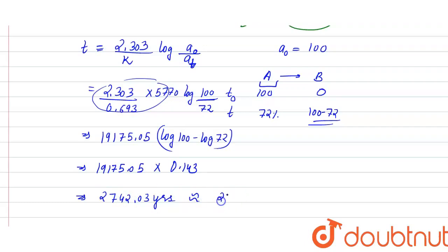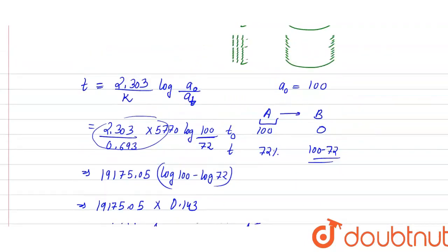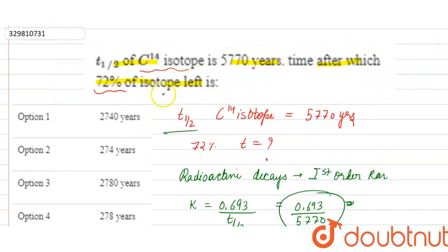Which is approximately equal to 2740 years. So this is my time after which 72% of the isotope is left. If we check the options, option number one shows 2740 years. So this is the right answer. Thank you.